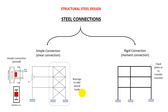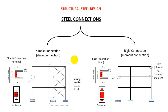Looking closely at a simple connection joint, it is made to be as simple as possible and it allows rotation — it is not fixed. The beam is not entirely fixed to the supporting column; it allows rotation — that is called the simple connection. For the rigid connection, it is totally fixed to the supporting column and does not allow any kind of rotation.